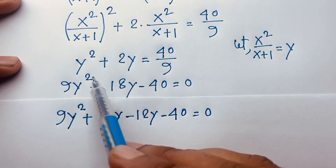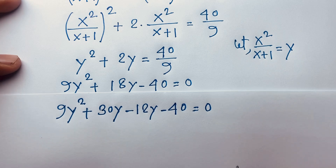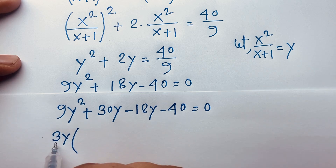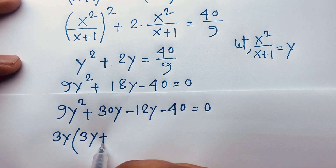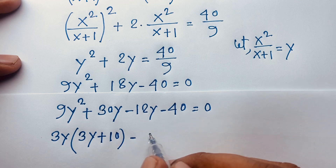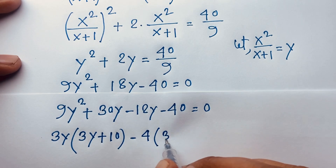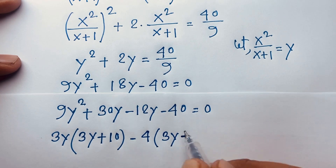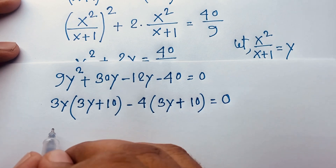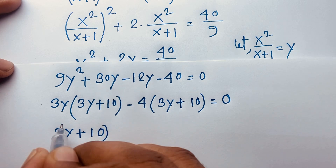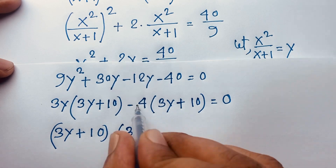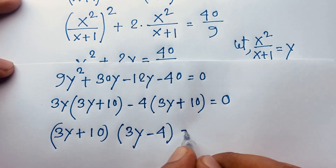Grouping terms: 3y is common in the first two terms, giving 3y(3y + 10), and −4 is common in the last two terms, giving −4(3y + 10) = 0. Now (3y + 10) is common, so we get (3y + 10)(3y − 4) = 0.